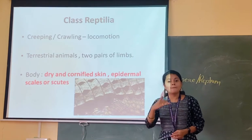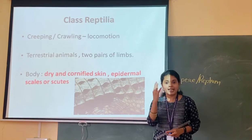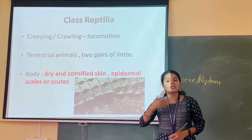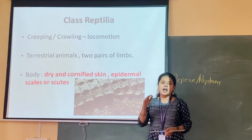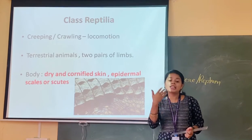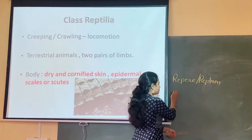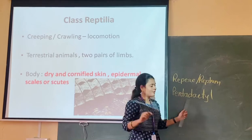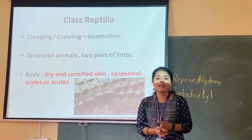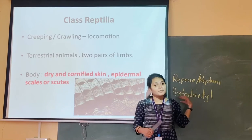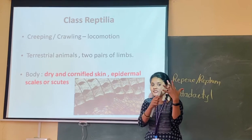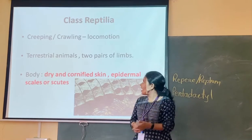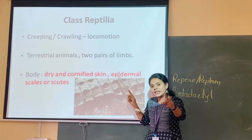Now these organisms belong to superclass Tetrapoda — 'tetra' meaning four limbs. So these animals also have two pairs of limbs, and these two pairs of limbs are pentadactyle type. Penta meaning five, dactyle meaning digits — so these limbs are developing five digits. So there are two pairs of limbs which are pentadactyle type.